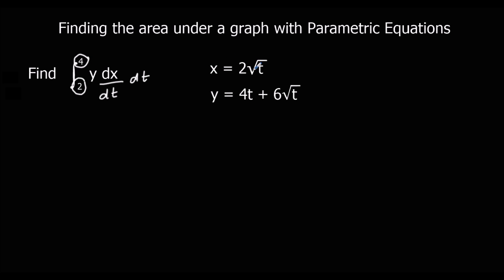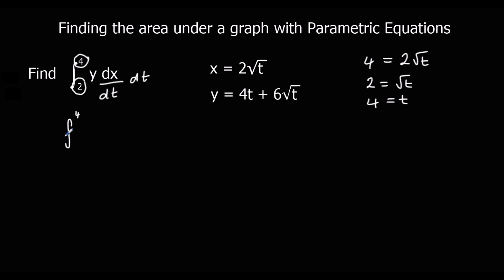When x is 4, we use the equation that links x and t. If we halve both sides, 2 equals root t; square both sides, t is 4. So when x is 4, t is 4. And when x is 2, we get 2 times root t, halve both sides, 1 equals root t, square both sides, t is 1. So when x is 2, t is 1.